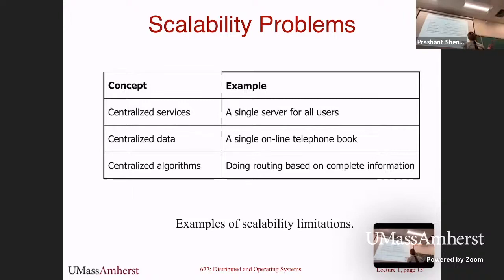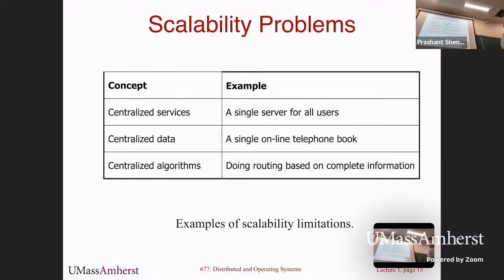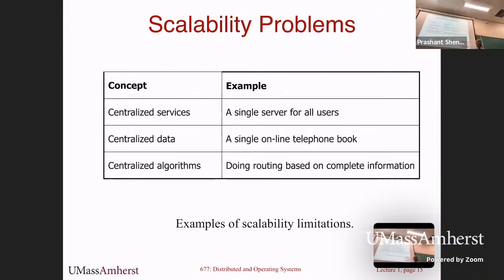So if you want to scale beyond that bottleneck, you have two options: either put all that centralized data on a bigger machine — buy more disk, more memory, more processing — or make it distributed, running on more than one machine, giving more capacity to serve users. That's essentially the scalability argument for why we want to make our systems distributed.